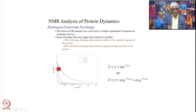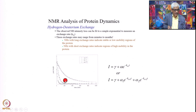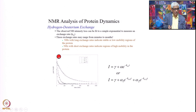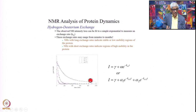The one which exchanges very rapidly is very likely on the surface. The one that takes more time is probably slightly in the interior. Initially all of them will start at the same point, and the very slow one is in the interior. These exchange rates have information about the structure of the protein.